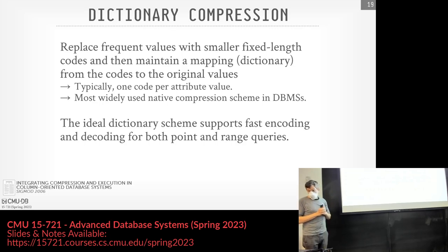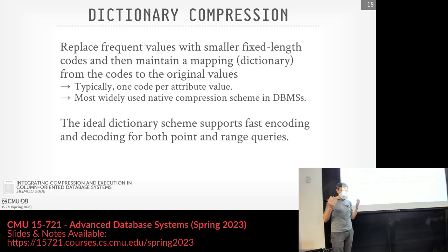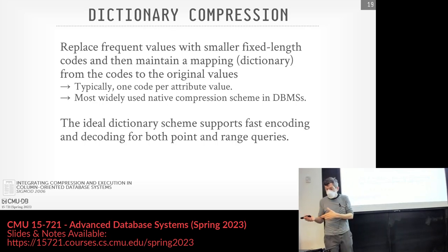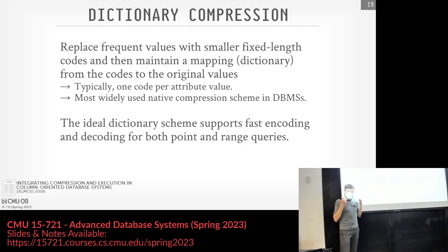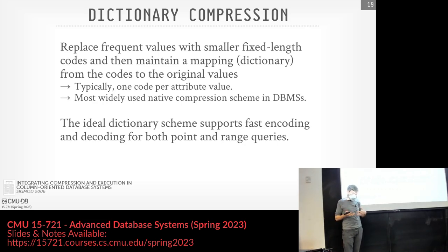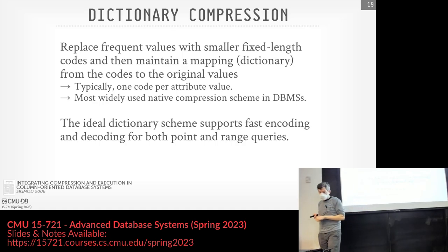The basic idea of dictionary compression is that we take frequent values that occur in our column and replace them with a fixed-length code as a placeholder for what that value represents. We maintain a separate dictionary data structure as a mapping from a given dictionary code back to its original value. This is how column store systems convert variable-length strings into fixed-length values — because dictionary codes are always fixed-length. We get the benefit of compression and also everything becomes nicely aligned in our columns.